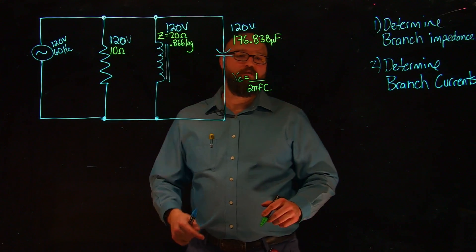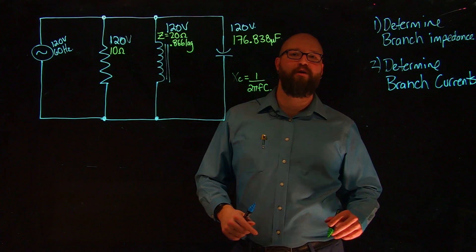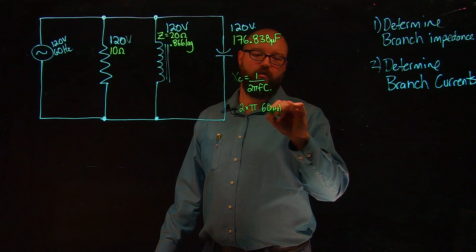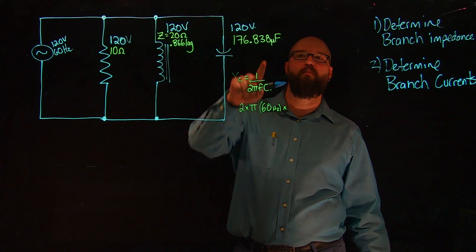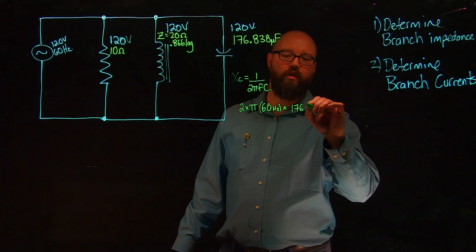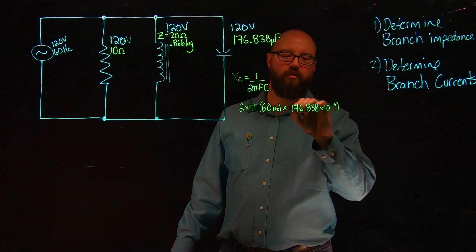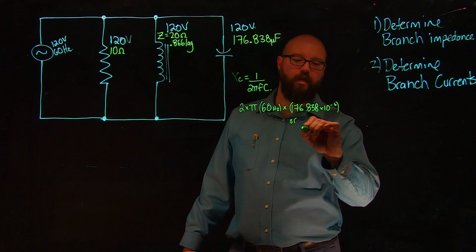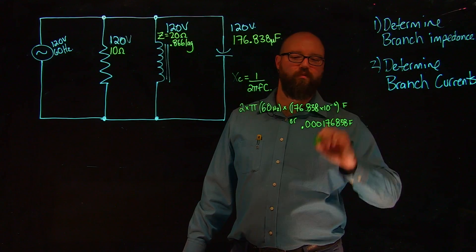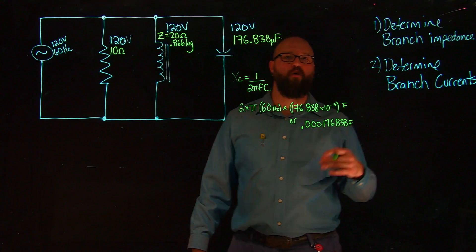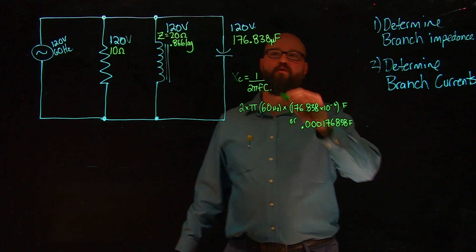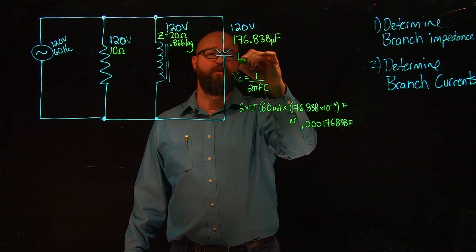We know that we have 60 hertz and 176.838 microfarads of capacitance. So we take 2 times pi times 60 hertz — and there are two ways to enter the capacitance: we can write 176.838 times 10 to the power of negative 6, or move the decimal and say 0.000176838. Both give us the farad value, and we need to work in farads to solve for ohms. Once we punch those numbers in, we should end up with a capacitive reactance of around 15 ohms.